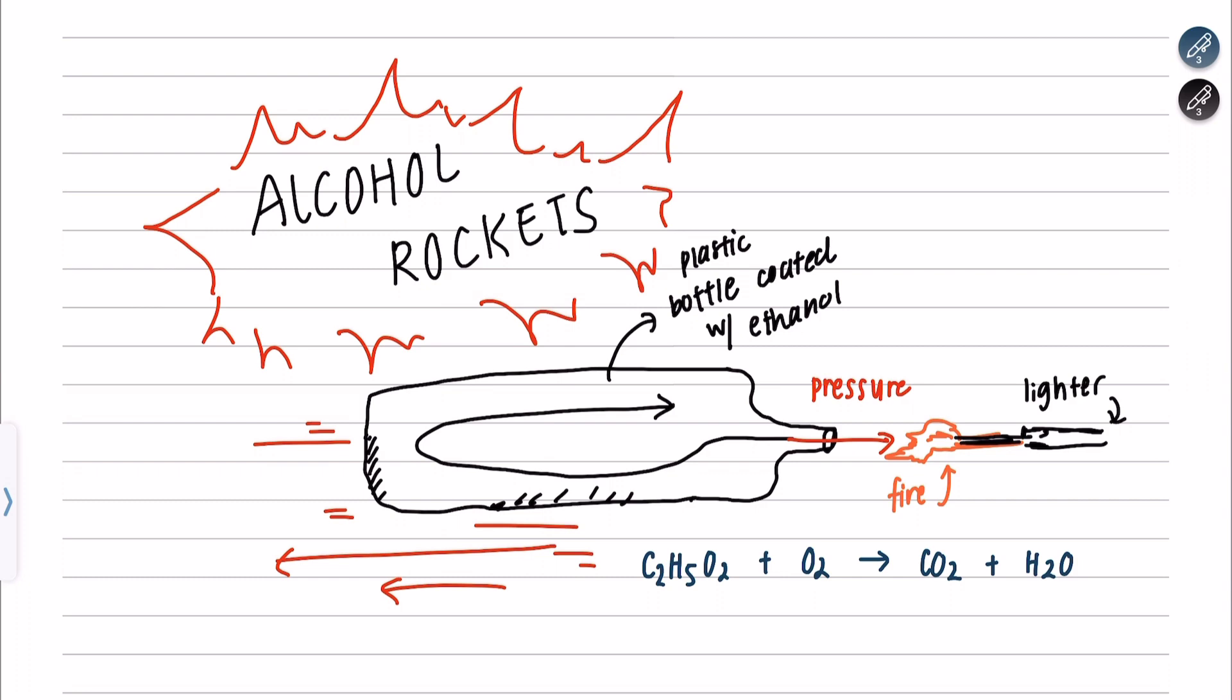Basically, the heat causes the ethanol to vaporize and increases the pressures inside the bottle whilst combustion happens. The vaporized alcohol will then shoot out of the hole from the bottle cap, releasing carbon dioxide and water.